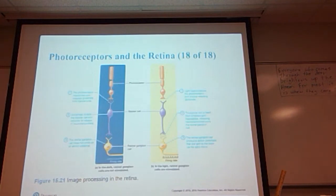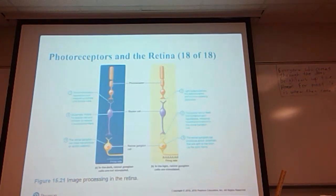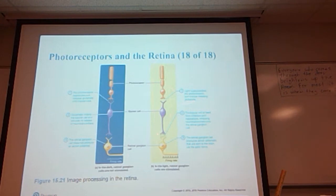To summarize: in the dark, the photoreceptor depolarizes, releases glutamate into the bipolar cells, glutamate inhibits the cell, reduces the release of neurotransmitters, and the retinal ganglion cell does not produce an action potential — no signal goes forward. In light, the photoreceptor hyperpolarizes, stops releasing glutamate, and without glutamate the neurotransmitters get released, which sends the signal to where we figure out what we're looking at.